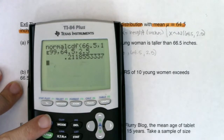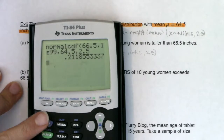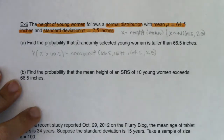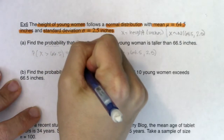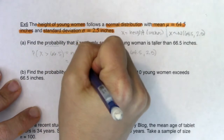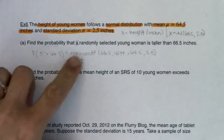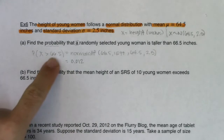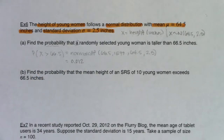Running normalcdf, we get about 0.212. So there's about a 21% chance that if I pick one young woman, her height will be taller than 66.5 inches.